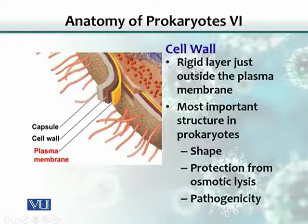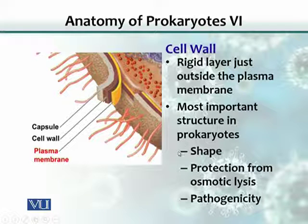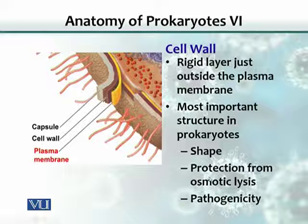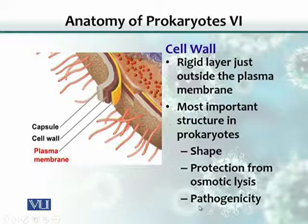The cell wall is a rigid layer present just outside the plasma membrane. It is the most important structure of the bacterium — of the prokaryotes — because it provides shape to the bacterium. It also gives protection against osmotic lysis, and it is also pathogenic, meaning it provides pathogenicity.